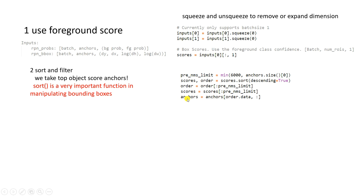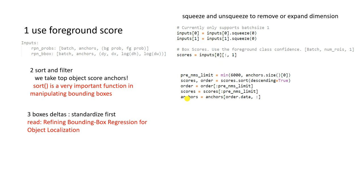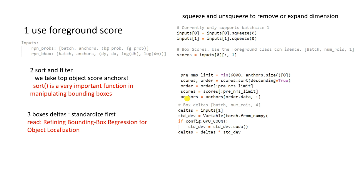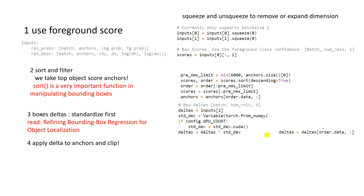So far we have the anchor boxes, applied the deltas from the RPN, filtered the anchors, and clipped the boxes. But we're not done yet — we need Non-Maximum Suppression. That's why we still need the class scores. NMS ensures each object is detected only once. There's a fast GPU CUDA implementation available. The idea is: if you have three boxes detecting the same car, you keep only the highest scoring one.